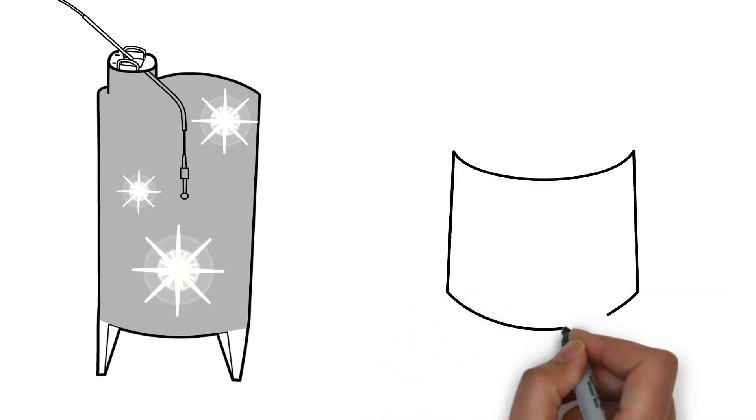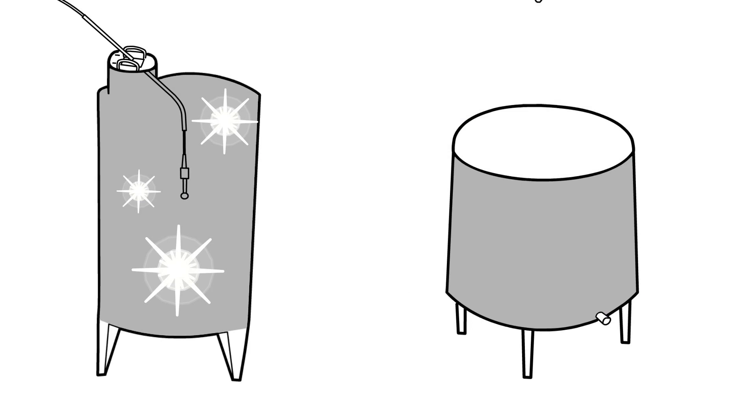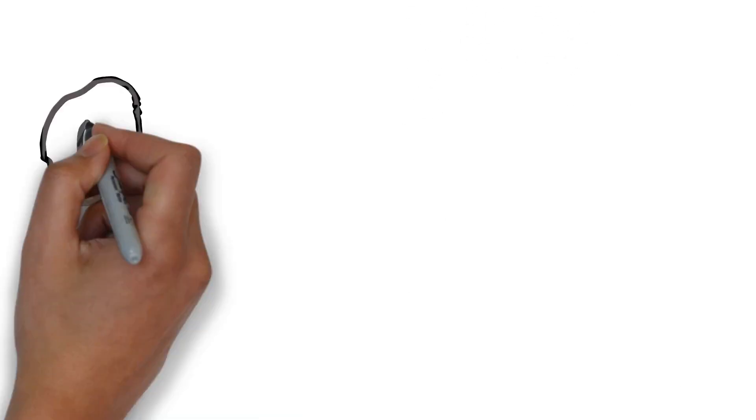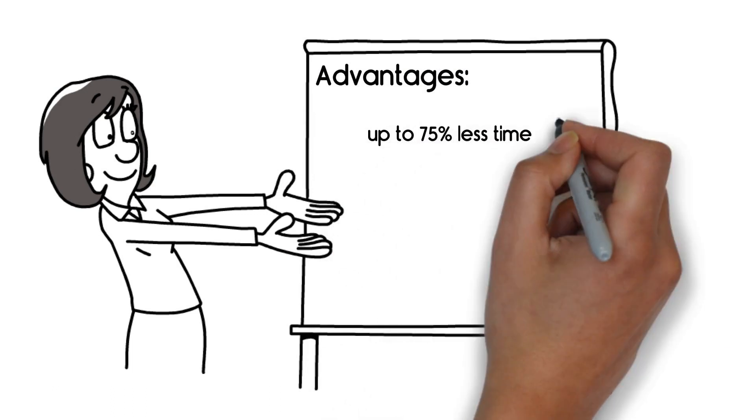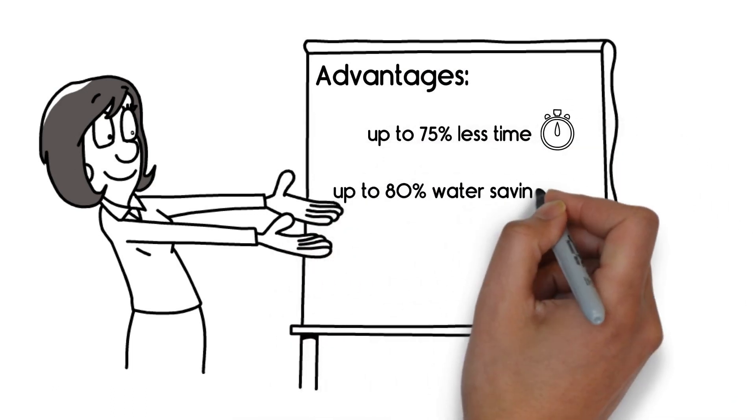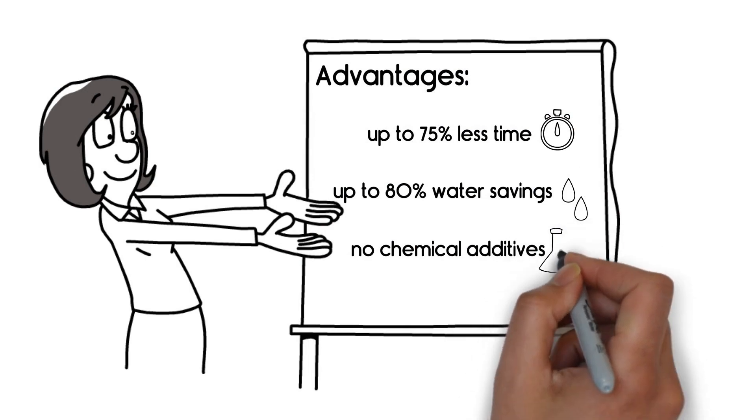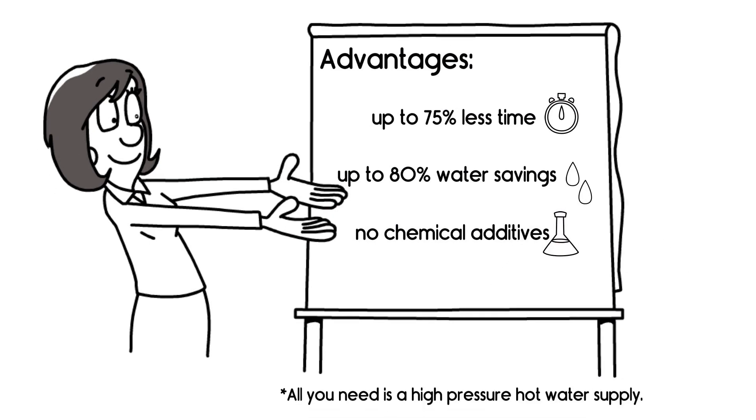Mulk Cleaning Systems offers appropriate mounting options for almost all tank formats. The advantages of our cleaning systems are obvious. Up to 75% less time, up to 80% water savings and no chemical additives. All you need is a high-pressure hot water supply.